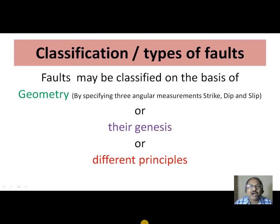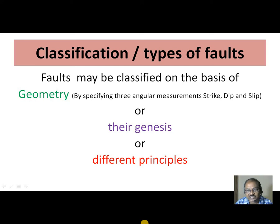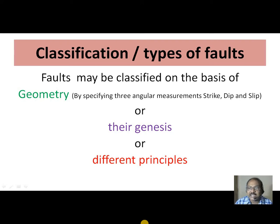Classification of faults, or types of faults, are done on the basis of geometry. Geometry means specifying three angular measurements: strike, dip, and slip. These three angular measurements are collectively known as geometry, and these were explained in the previous video lecture.